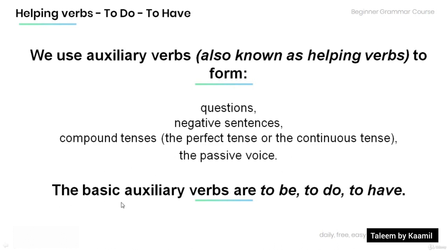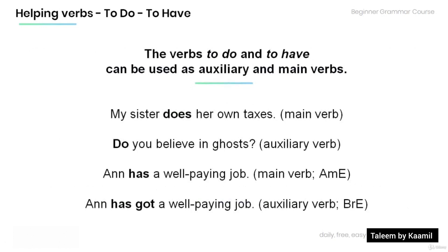Also note that the basic auxiliary verbs are to be, to do, and to have. Now the verbs to do and to have can be used as both auxiliary and main verbs. For example, in the sentence 'My sister does her own taxes,' the verb 'does' is used as the main verb. In the sentence 'Do you believe in ghosts?' the verb 'do' is used as an auxiliary verb to form a question.